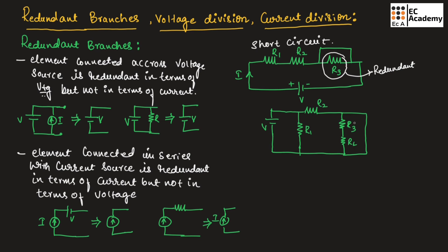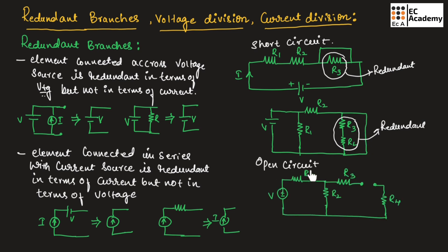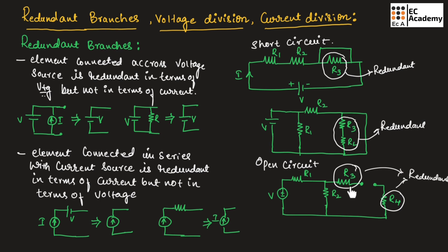Resistor R3 and RL are redundant — we can neglect these branches since all the current will flow through the short circuit. If we consider an open circuit, resistor R3 and R4 are redundant because they are connected across an open circuit. Since no current flows through the open circuit, all the current will flow through resistor R2. We can neglect R3 and R4 in the branch.